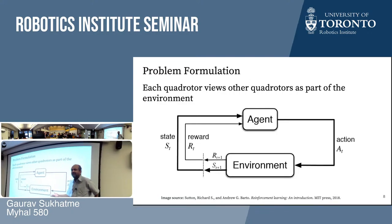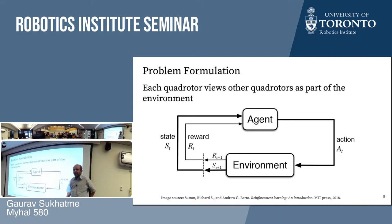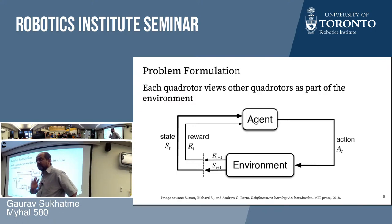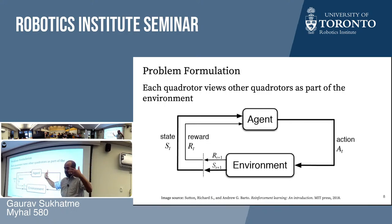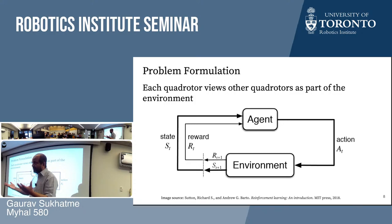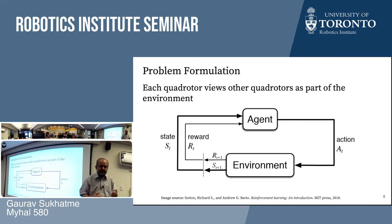Our problem formulation is simple: each vehicle in the swarm views every other vehicle as part of the environment. Each vehicle sees some inputs, generates four numbers as output — its own four motor thrusts — and hopefully the ensemble behavior produces coordinated flight.